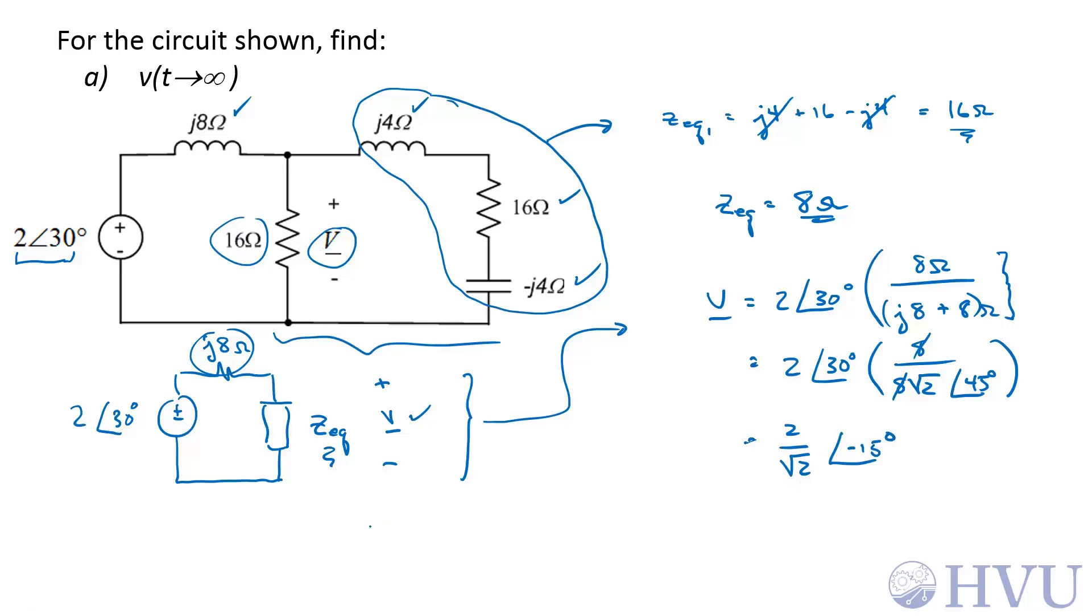We want V(t), so V(t) is equal to 2 over root 2 cosine of my original frequency, which was 8 radians per second, minus 15 degrees. There's my answer for part A.